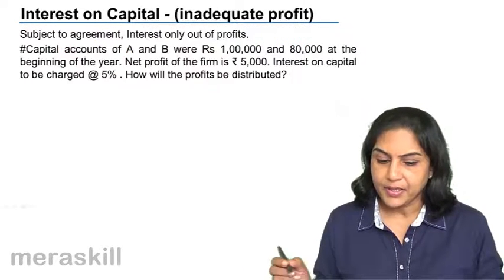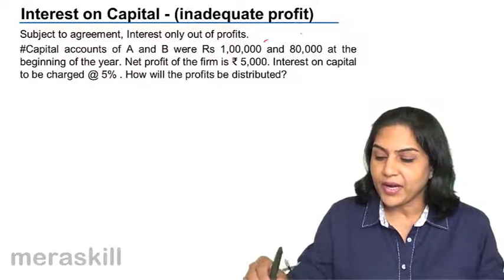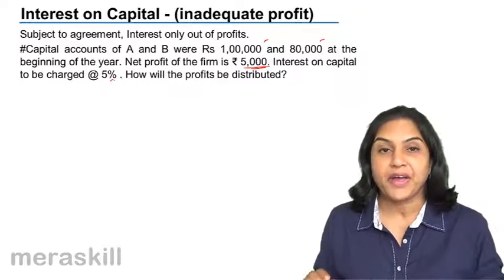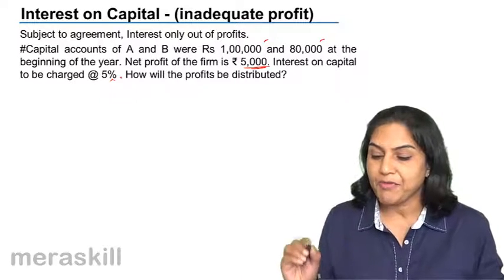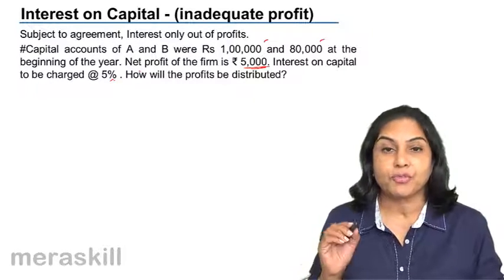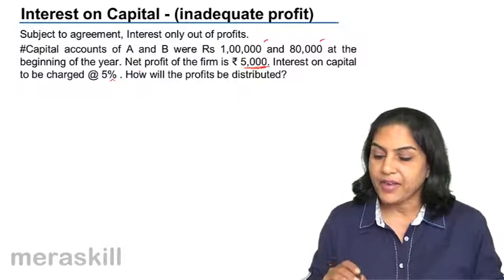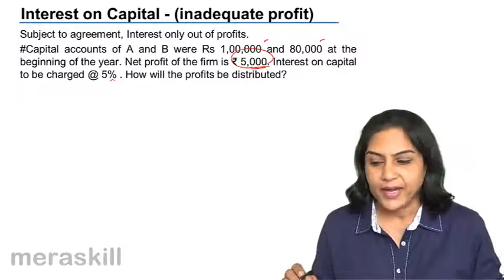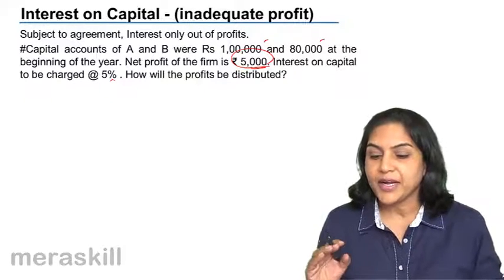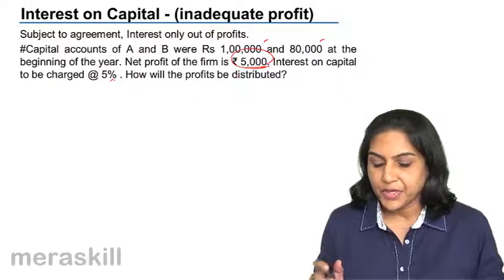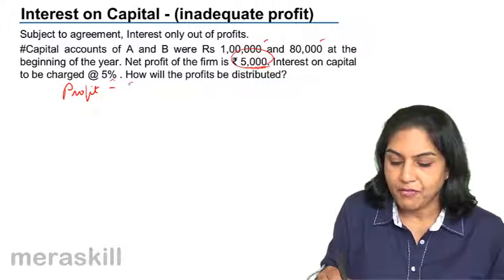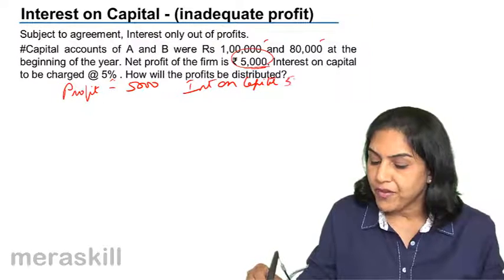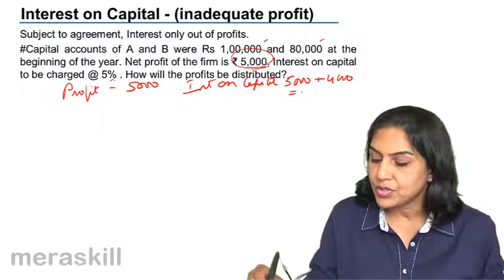Let us take yet another example. Capital accounts of A and B are 1 lakh and 80,000. Net profit of the firm is only 5,000. Interest on capital is to be charged at the rate of 5%. If we charge interest at 5%, we have to pay 5,000 to A and 5% on 80,000 — we have to pay 4,000 to B. That is 5,000 and 4,000, total is 9,000. But the profits are only 5,000. Interest has to be paid only out of profits, so profit is 5,000 and interest on capital comes to 9,000 total.